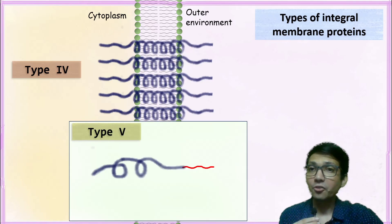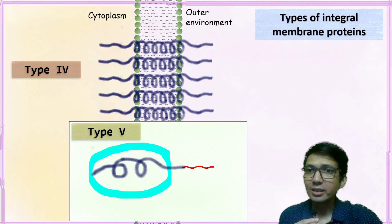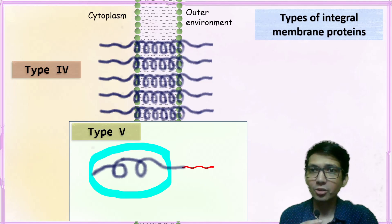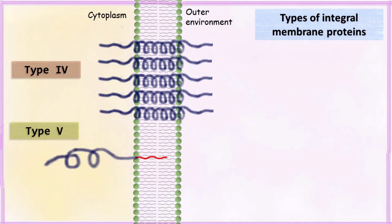In type 5, the protein itself is not hydrophobic — it is hydrophilic, so it loves to be in water. However, the protein has a lipid chain that is covalently attached to it. This covalently attached lipid molecule allows the protein to be embedded inside the lipid bilayer of the plasma membrane.